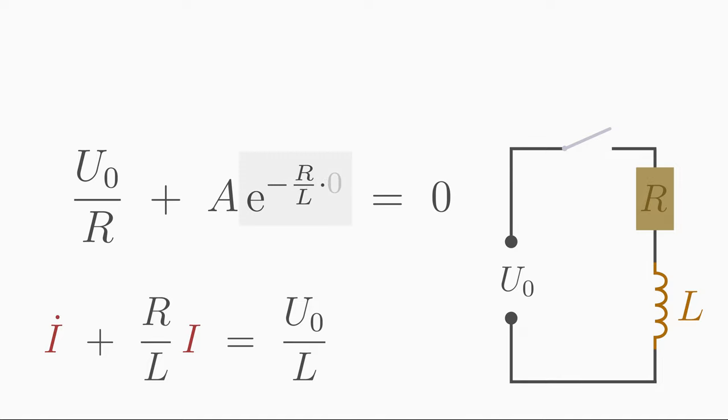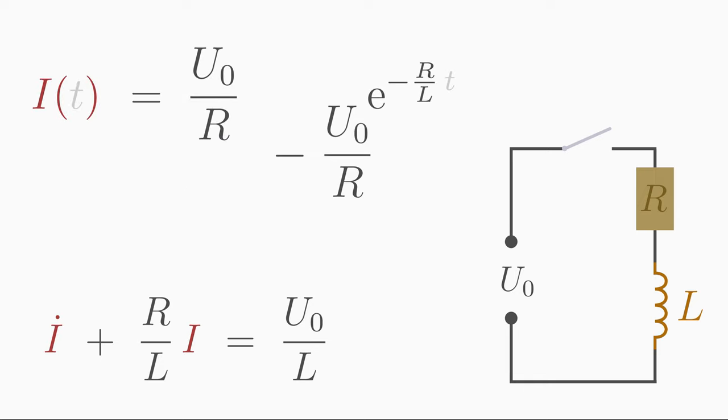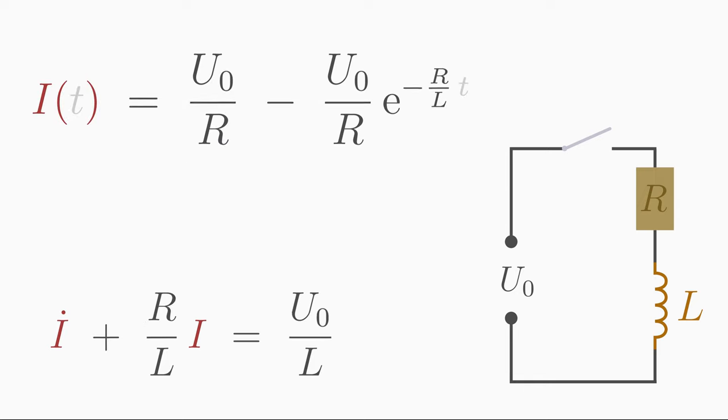e to the power of 0 equals 1. Solve for A and you get A equals minus U0 over R. Thus we have successfully determined the specific solution.